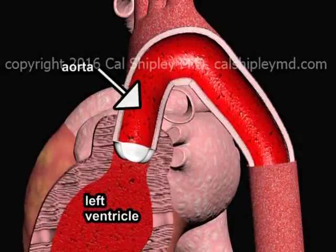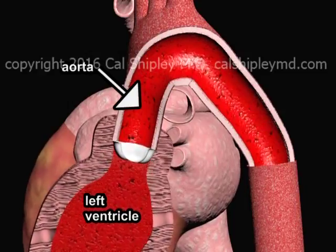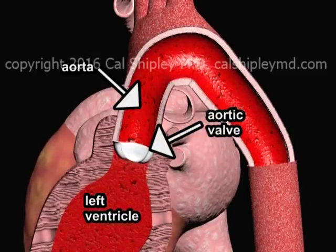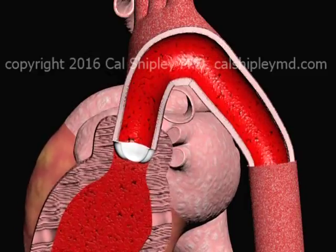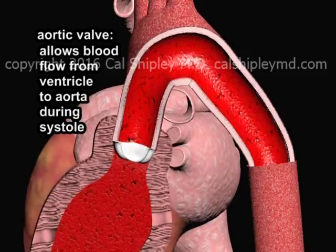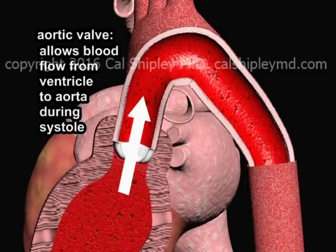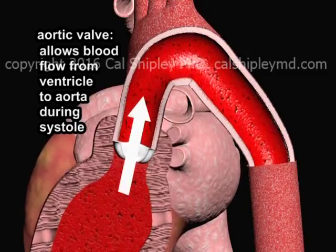Let's start with a review of aortic valve anatomy and function. Here is a side view of the aorta and the left ventricle of the heart seen in cross-section, with the aortic valve located at the junction between the two. The aortic valve's primary function is to facilitate blood flow from the left ventricle into the aorta during systole, when the ventricle contracts and the valve is open.